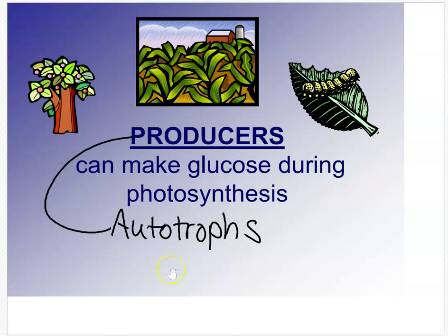A chicken, just because it produces eggs and food for us, is not considered a producer — it's still a consumer. Even though someone put chicken as a producer on their homework, producers are specifically defined as organisms that make glucose during photosynthesis. Cows are not producers; chickens are not producers.